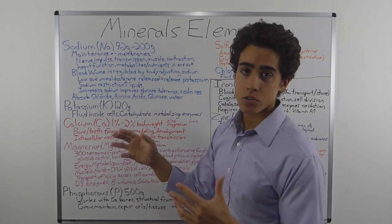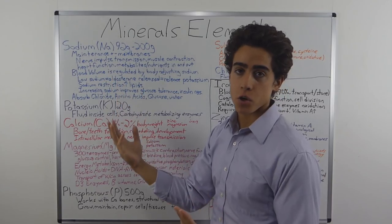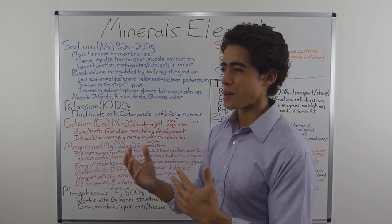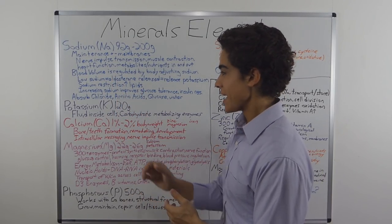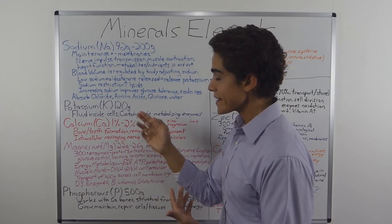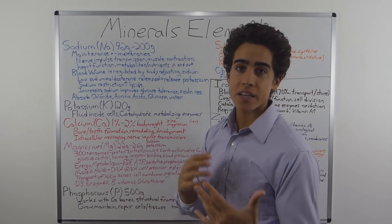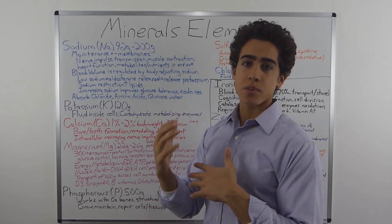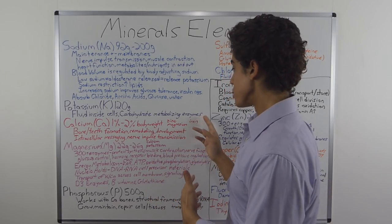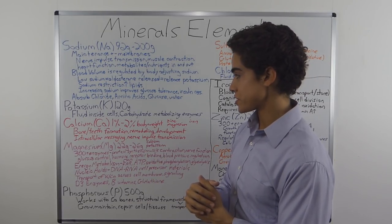Moving on to potassium, the amount of potassium in the body is 120 grams, and you would think it would be multiple times the amount of sodium from what we've been told, but not the case. Potassium is the fluid inside of cells, and its main function is actually for carbohydrate metabolizing enzymes. This is why plant foods have potassium. Your body needs potassium to utilize and digest some carbohydrate nutrients.